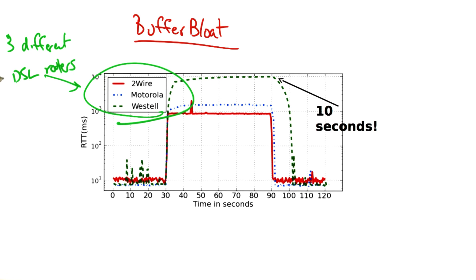In the example we've shown here, we have three different DSL routers. The y-axis shows the round trip time, or the latency, to a nearby server in milliseconds, and is shown in a log scale. We started an upload at the time 30 seconds, shown on the plot.